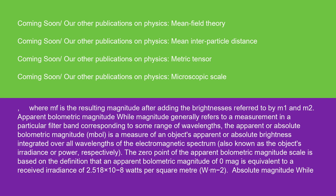Apparent bolometric magnitude: While magnitude generally refers to a measurement in a particular filter band corresponding to some range of wavelengths, the apparent or absolute bolometric magnitude (bol) is a measure of an object's apparent or absolute brightness integrated over all wavelengths of the electromagnetic spectrum (also known as the object's irradiance or power, respectively). The zero point of the apparent bolometric magnitude scale is based on the definition that an apparent bolometric magnitude of 0 mag is equivalent to a received irradiance of 2.518×10⁻⁸ watts per square meter (W·m⁻²).